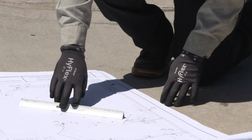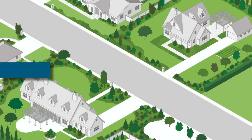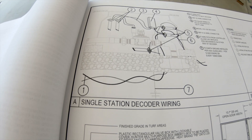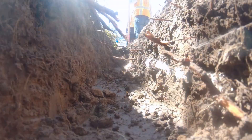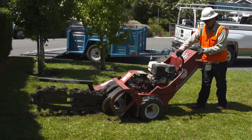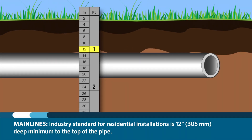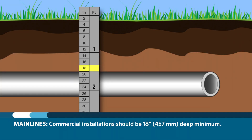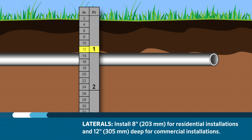Ultimately, it's important to read the plans carefully to determine what pipe is being specified for the installation. It is important to read the specifications and construction details on your plans to determine the proper depths of each pipe before trenching for mainlines and laterals. For mainlines, an industry standard for most residential installations is 12 inches deep minimum to the top of the pipe, while commercial installations should be 18 inches minimum. When installing laterals, a good practice is to install them at 8 inches deep to the top of the pipe for residential installations and 12 inches deep for commercial installations.